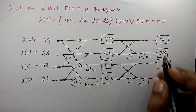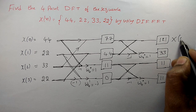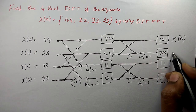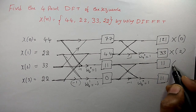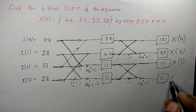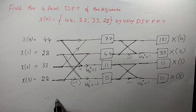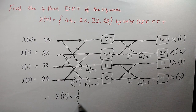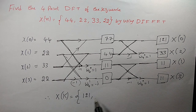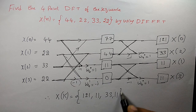The output in decimation in frequency FFT is in bit-reversed order. For capital N equal to 4, the bit-reversed order is X(0), X(2), X(1), X(3). Therefore the DFT of the given sequence X(K) is: X(0) = 121, X(1) = 11, X(2) = 33, X(3) = 11.